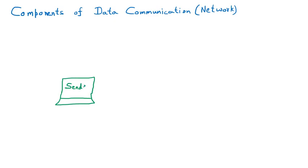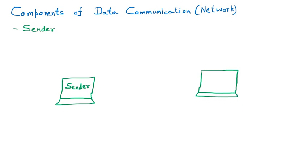The first component of data communication is the sender — the person or device who is going to send the data to somebody. Now if a sender is there, for sure there will be some person or device who is going to receive that data. That is called the receiver, which is the next component of data communication.